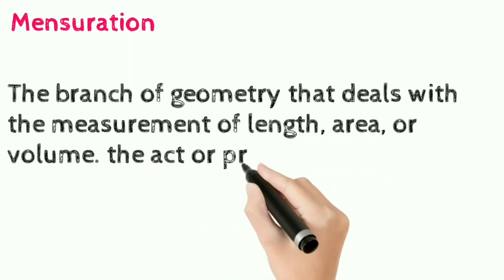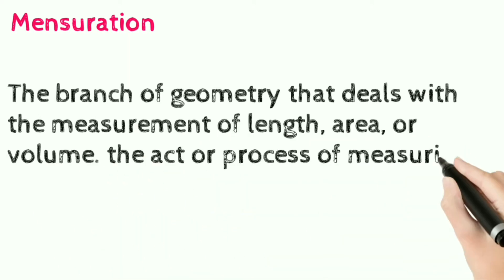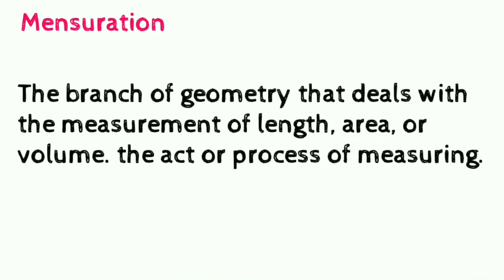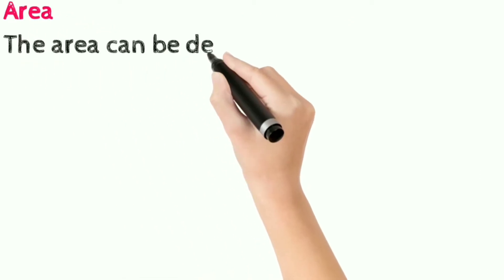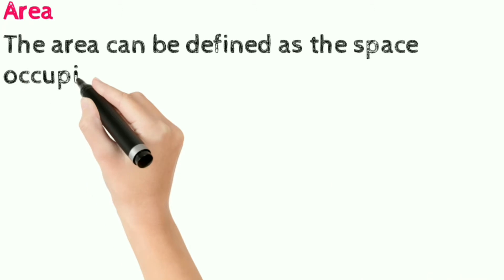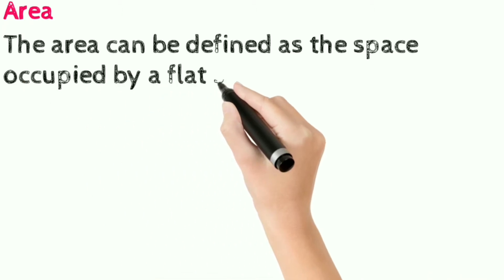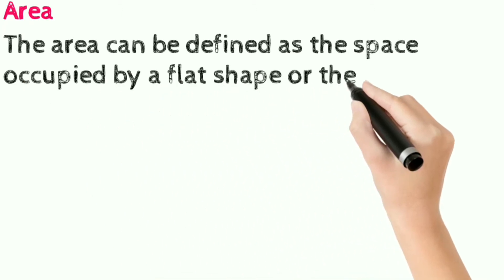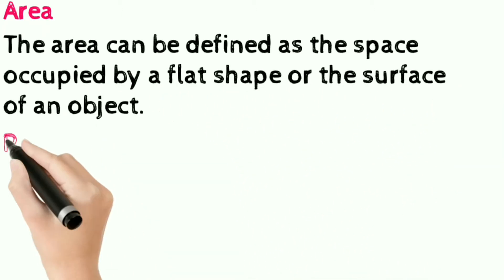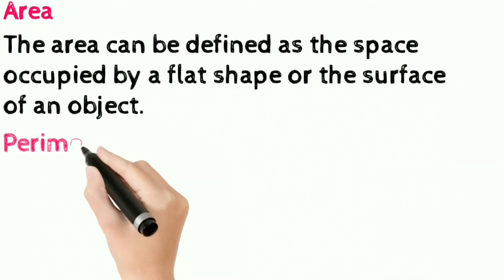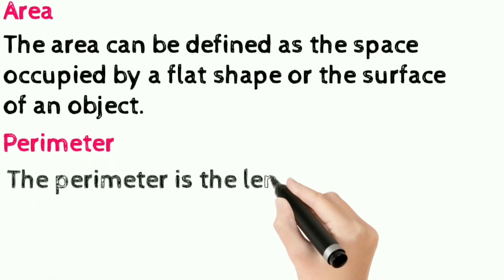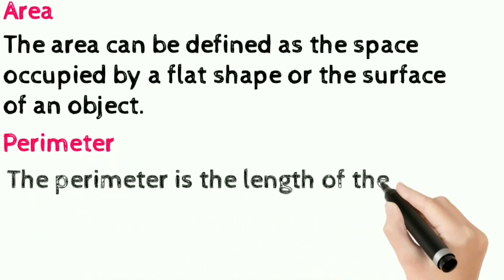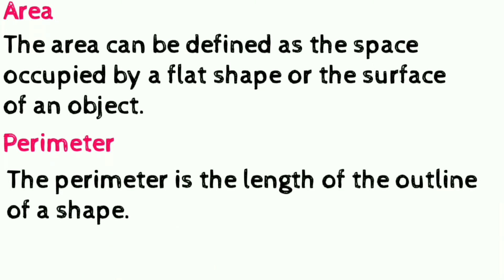Area can be defined as the space occupied by a flat shape or the surface of an object. Perimeter is the length of the outline of a shape.